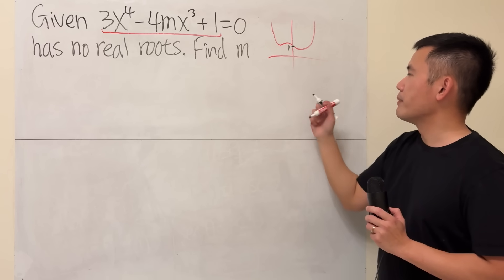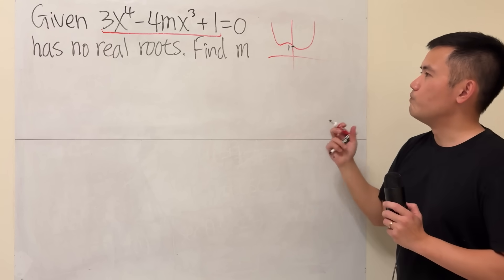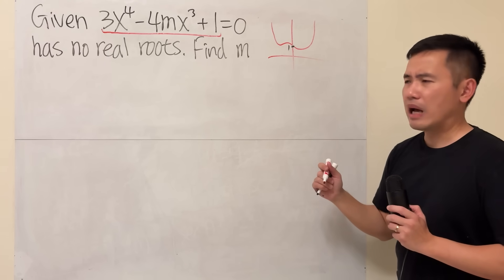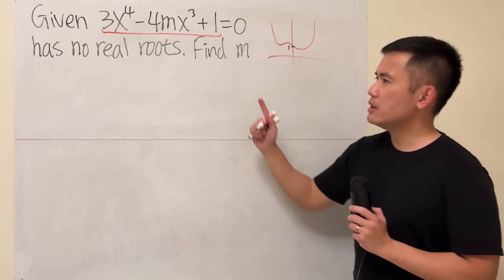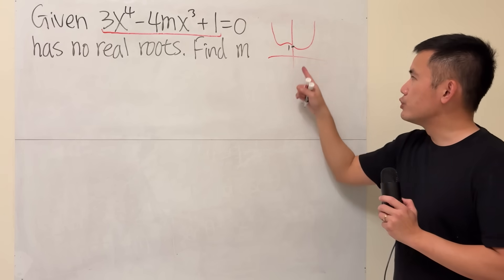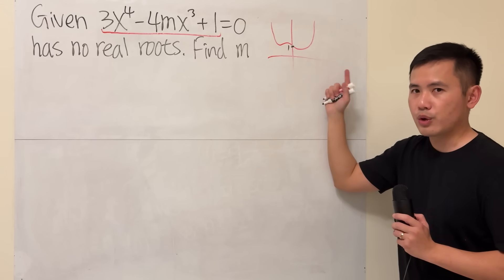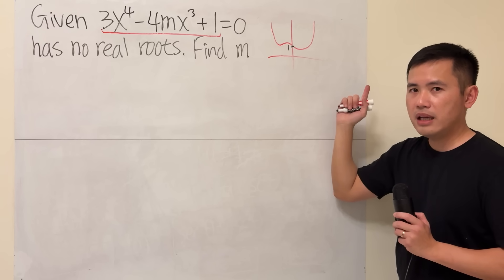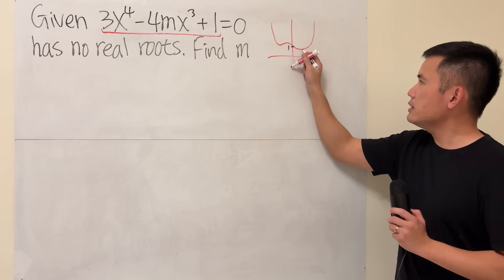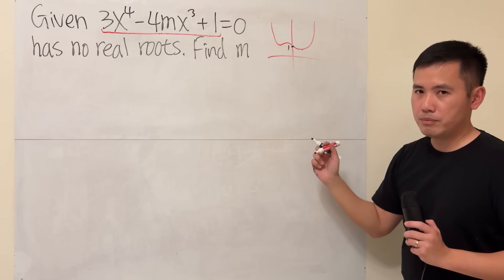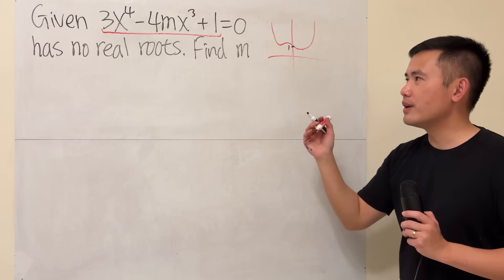How are we going to make sure this has no real roots though? We just have to make sure that the curve does not go down too much and cross the x-axis. Notice here we have the minimum, so we will have to do some calculus to find out the minimum.